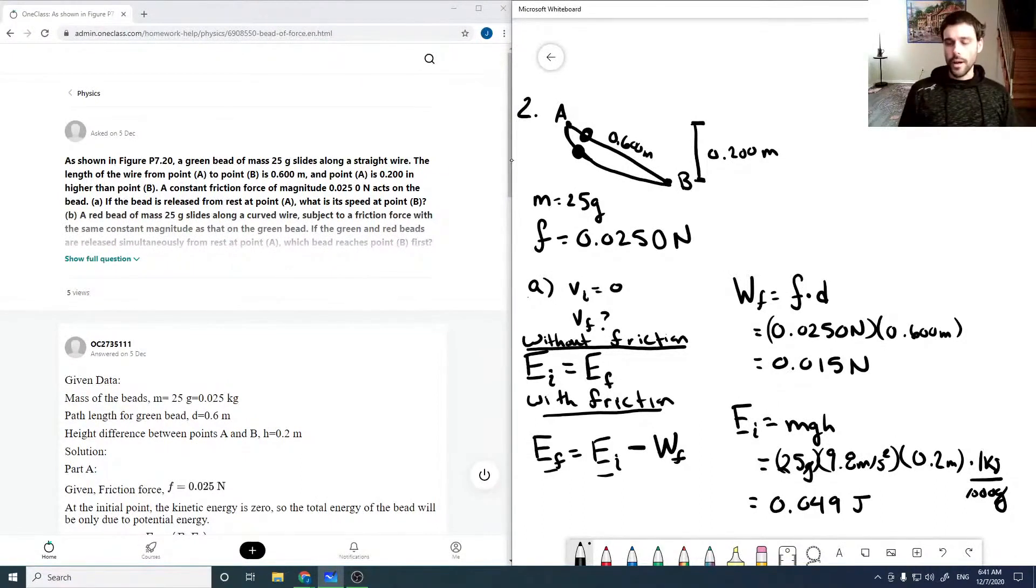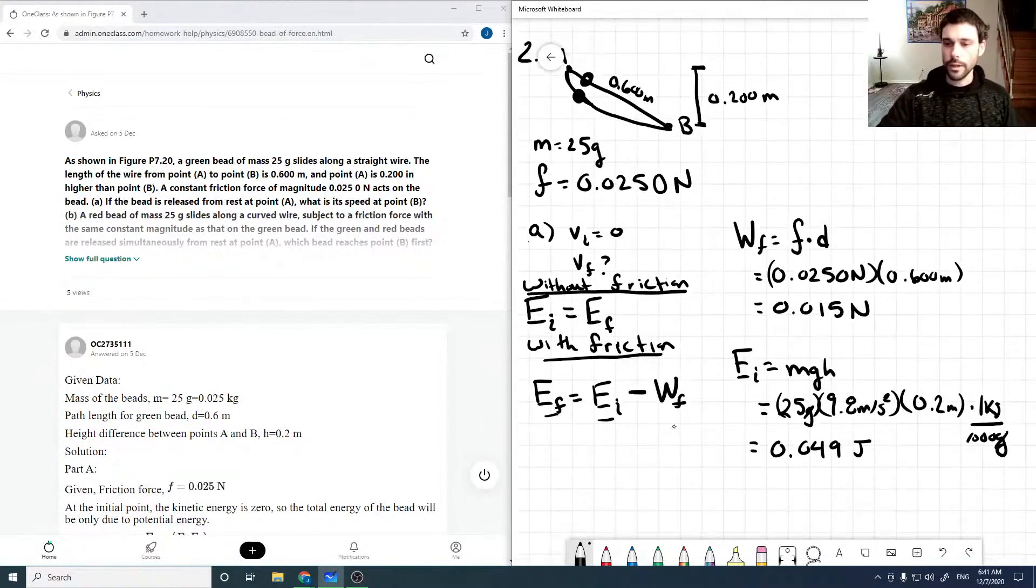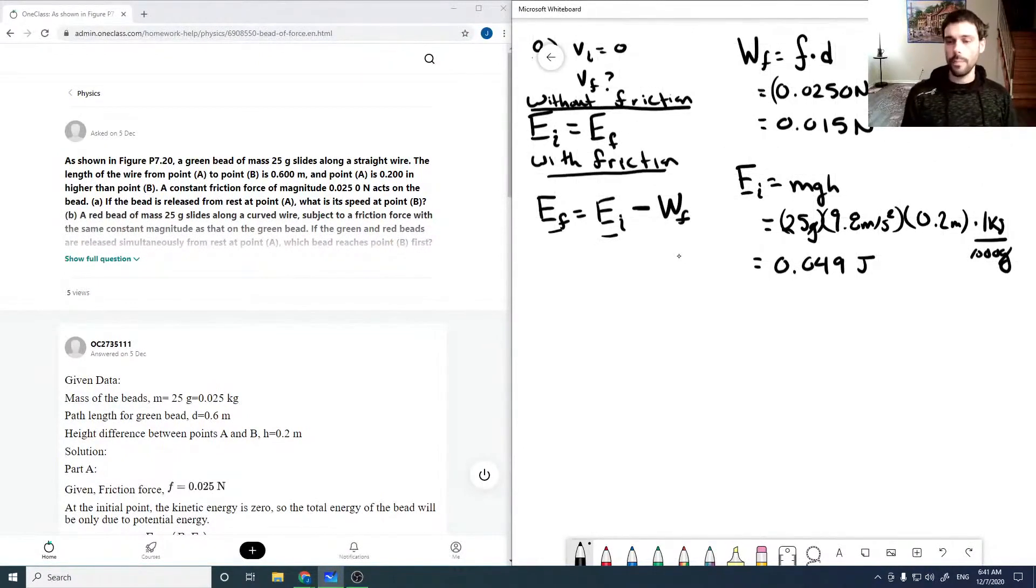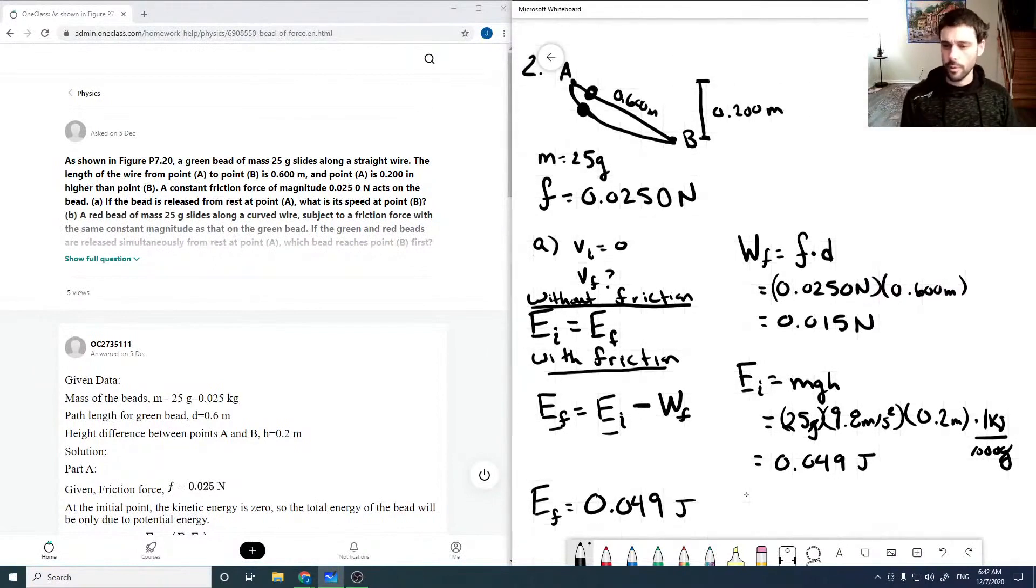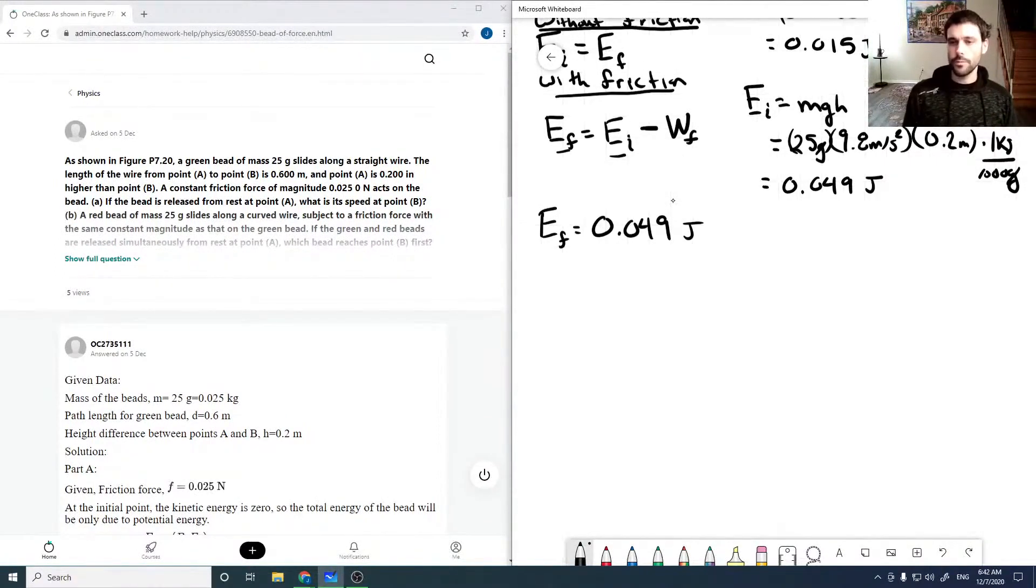And then our final energy is going to be purely kinetic. But we can solve for it now. So our EF is 0.049 joules. Oh, I made a mistake on my work. Just a slight. So a newton meter is a joule, not a newton. So that should have been joules. All right. And so our final energy is going to be this 0.049 minus our frictional work, which is then 0.034 joules.